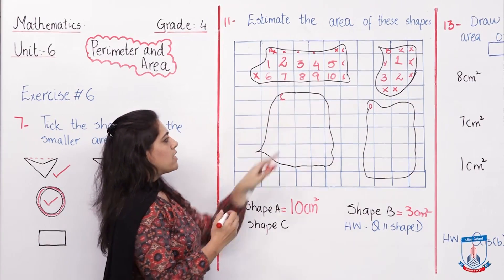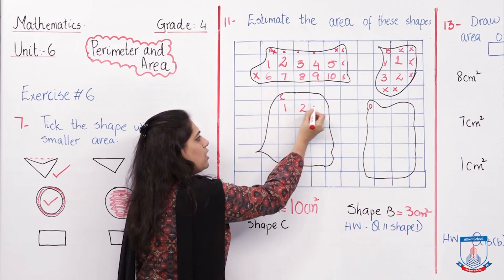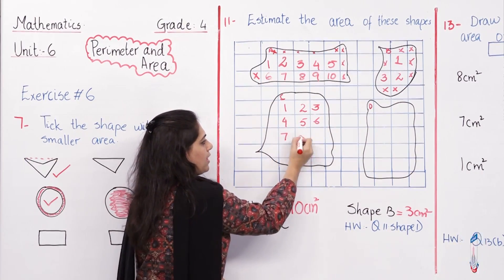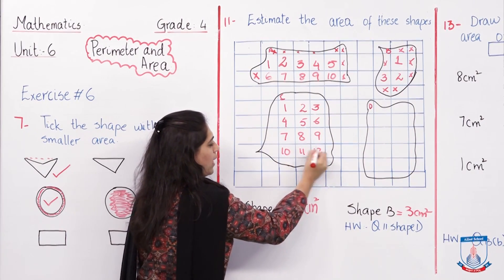Let us see how to do the D part. First, the complete squares I am going to cover them and write numbers on them. It is 1, 2, 3, 4, 5, 6, 7, 8, 9, 10, 11, and 12.